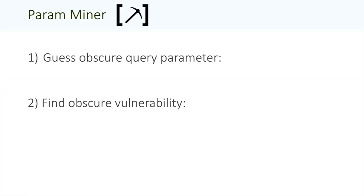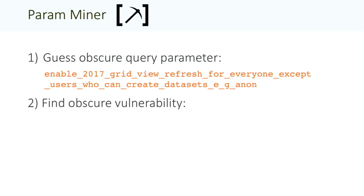And it started off quite well. I found some quite remarkable query parameters, like this one here. But the next step just went horribly wrong. The most interesting thing I could find in these query parameters that was actually serious, over and over, was boring old reflected cross-site scripting, which is not something that I really want to give a talk about.